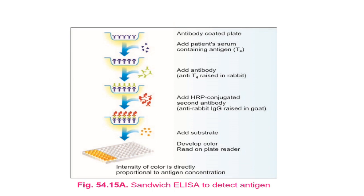In this sandwich ELISA example, plates are coated with antibody. Patient serum containing antigen such as T4 is added. Then anti-T4 antibody raised in rabbit is added, followed by HRP (horseradish peroxidase) enzyme conjugated to anti-rabbit IgG raised in goat. In a positive reaction, after adding the substrate, color develops and is read in the spectrophotometer. The intensity of color is directly proportional to the antigen concentration in the sample.